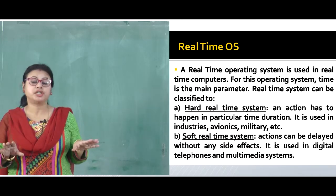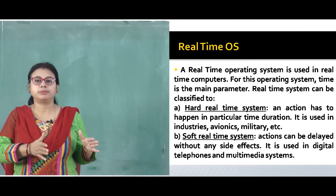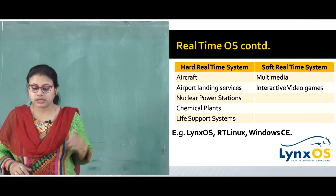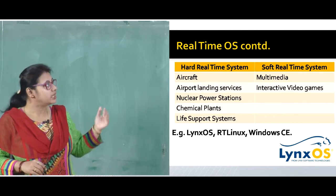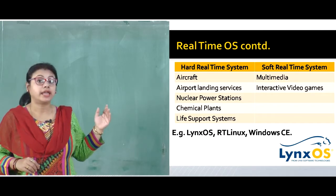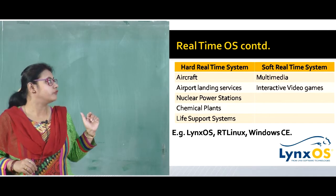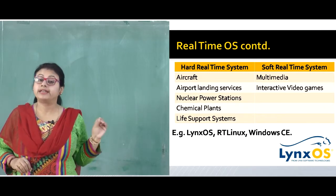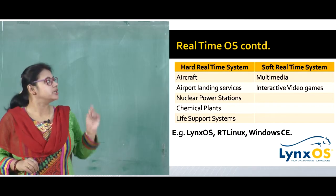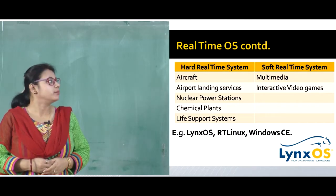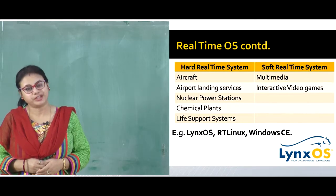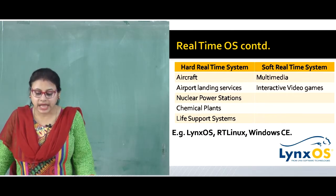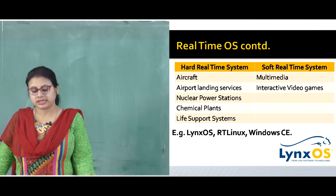To differentiate: hard real-time systems are used for aircraft, airport landing services, nuclear power stations, chemical plants, and life support systems where time is the critical factor. Soft real-time systems are mainly used for multimedia and interactive video games. Examples of real-time operating systems are LynxOS, RT-Linux, and Windows CE.